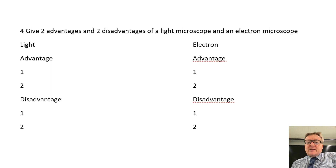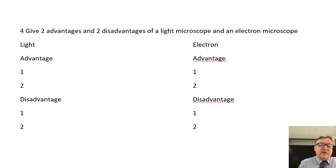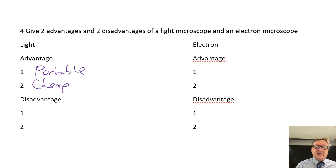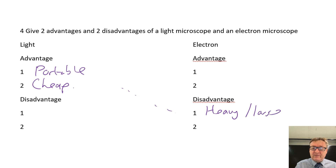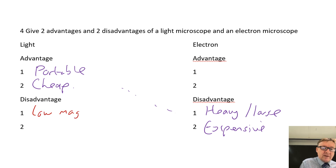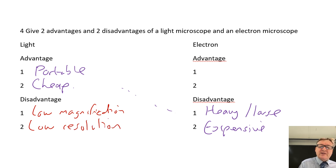Question number four: give two advantages and two disadvantages of the light microscope and electron microscope. An advantage of a light microscope is that it is portable, and another advantage is it's cheap. The disadvantages of an electron microscope are that they are heavy and large, and the other disadvantage is they're expensive - they just go against each other.